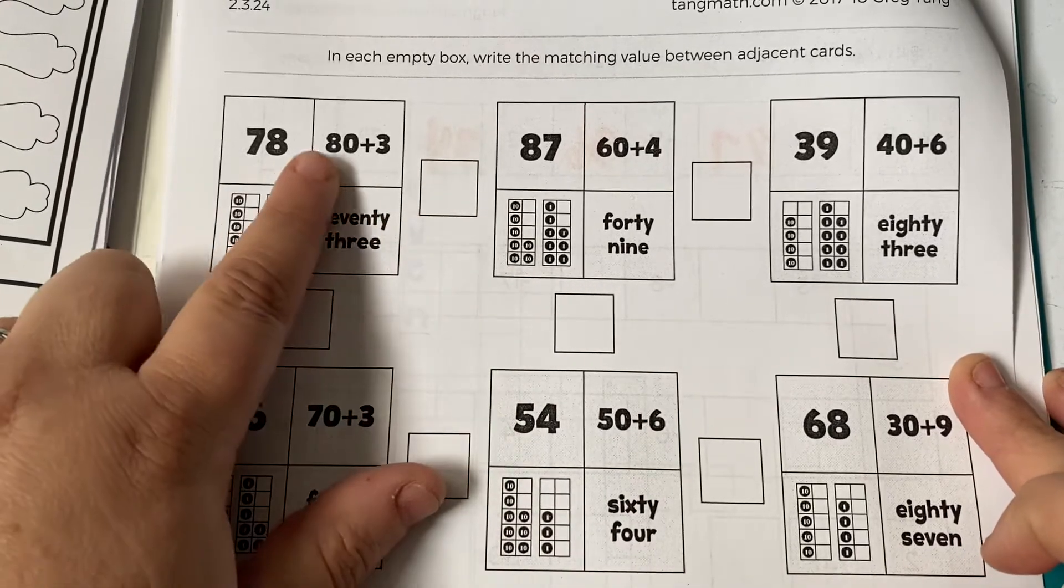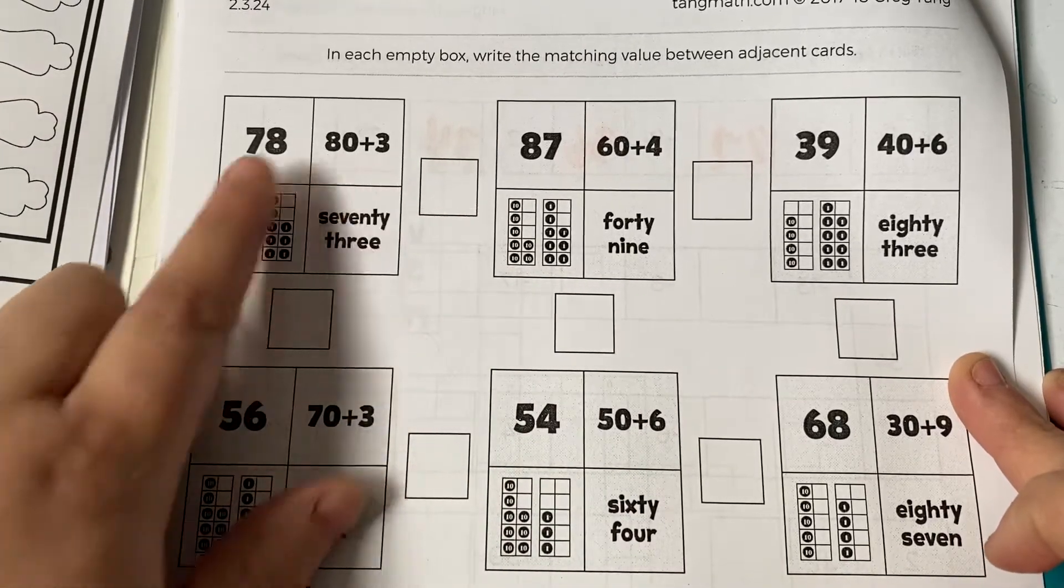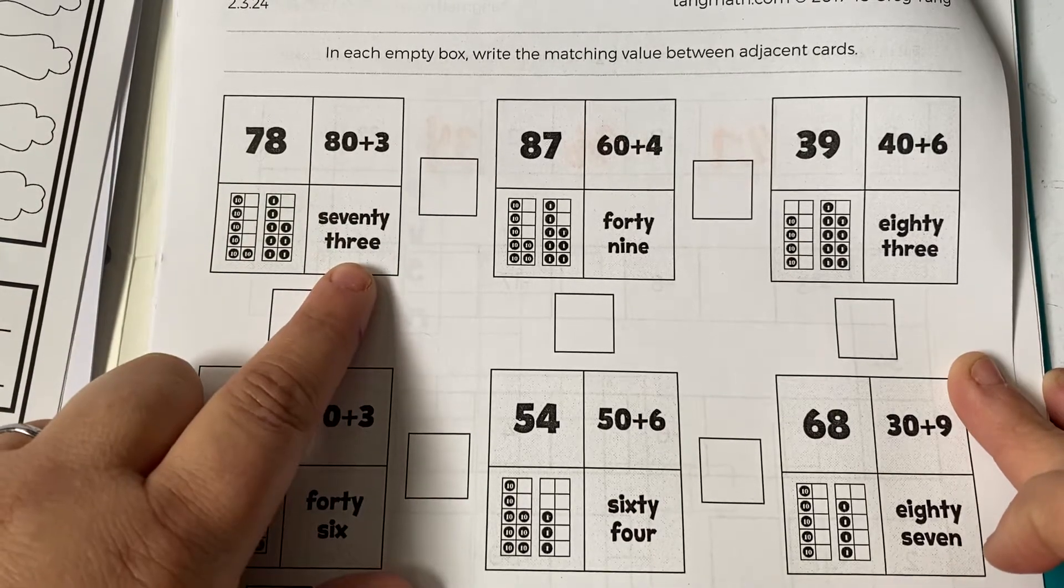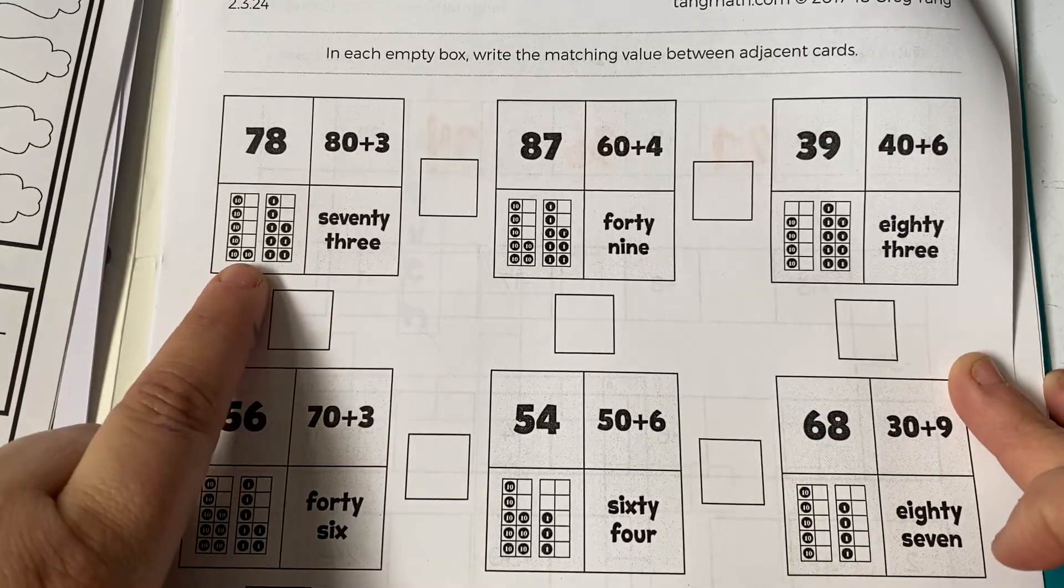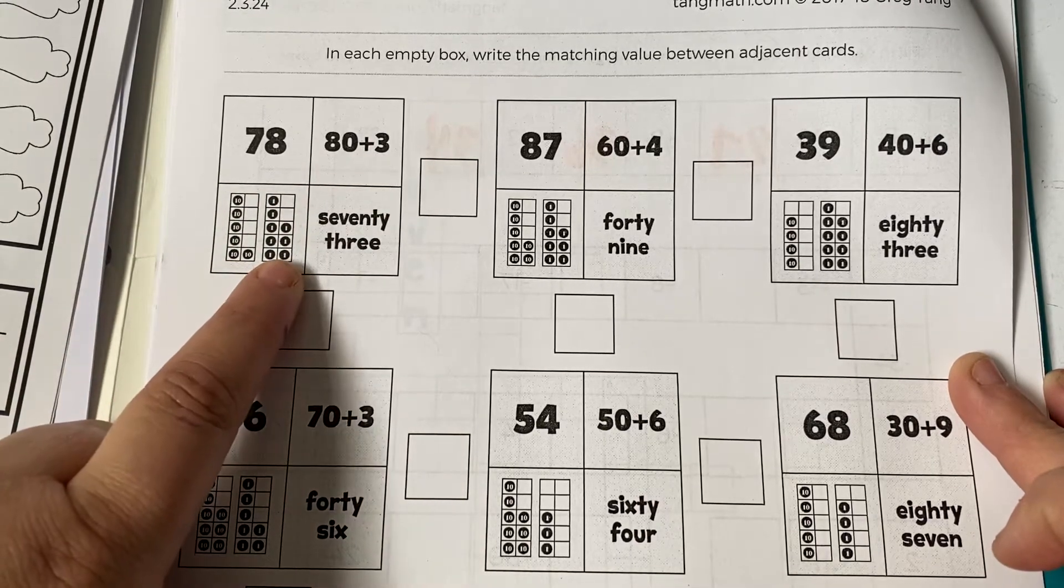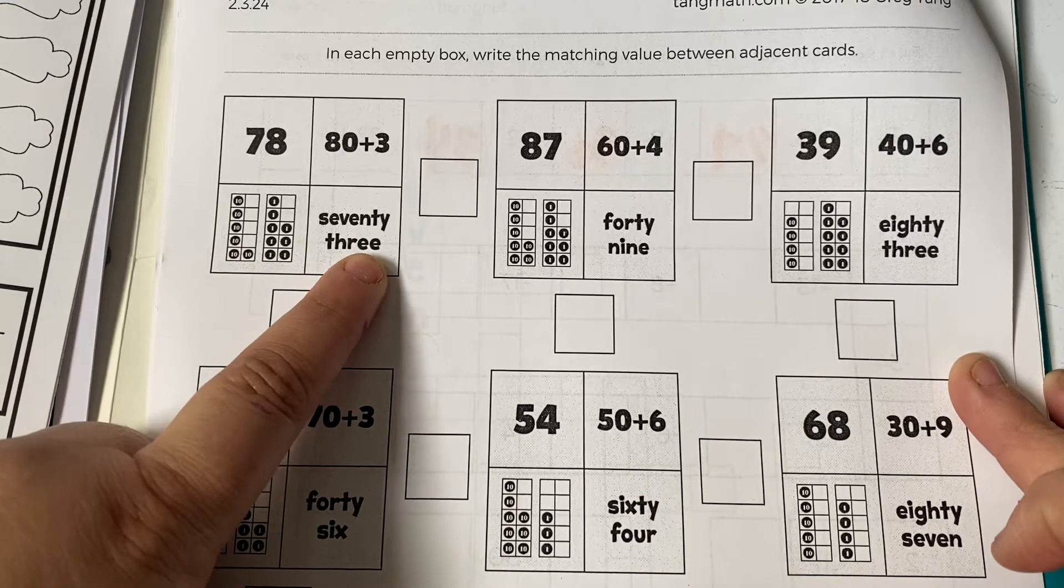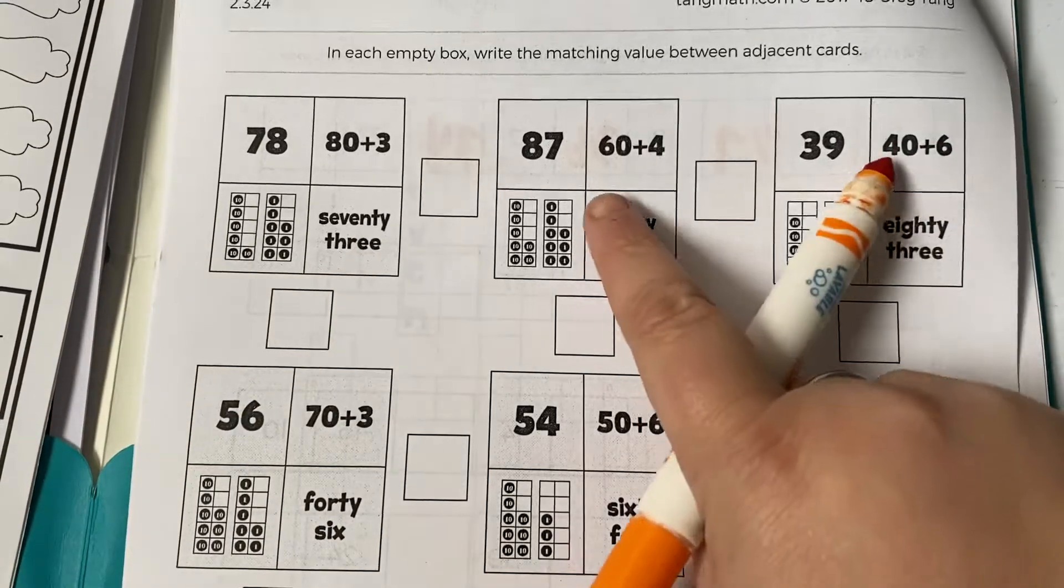You write the matching value in the middle box. These are different forms: standard form, expanded form, a model, and word form. So let's see, we have 78, 83, there's 68, 73. Here I'm looking over here.